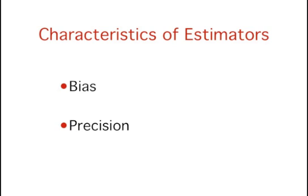Here we'll discuss two characteristics of point estimates: bias and precision. An estimator is biased if it tends to either overestimate or underestimate the parameter. The precision of an estimator refers to how close it comes to the parameter.